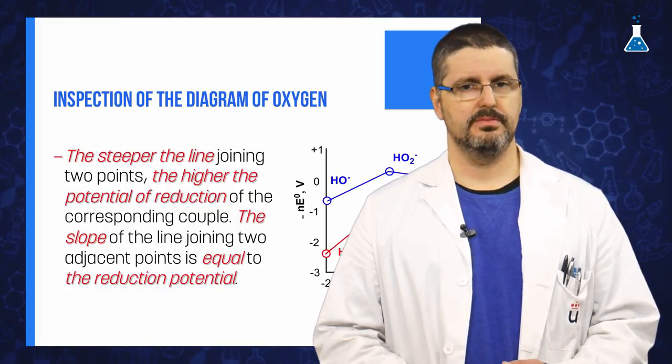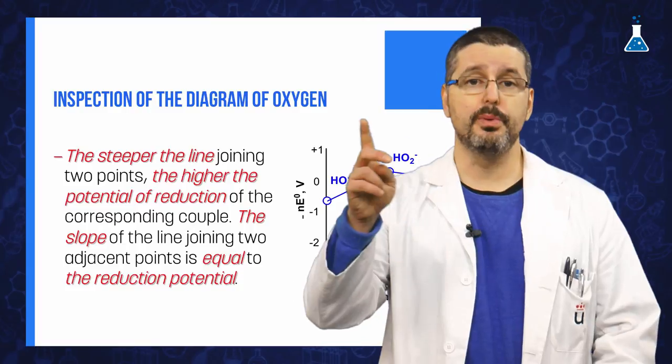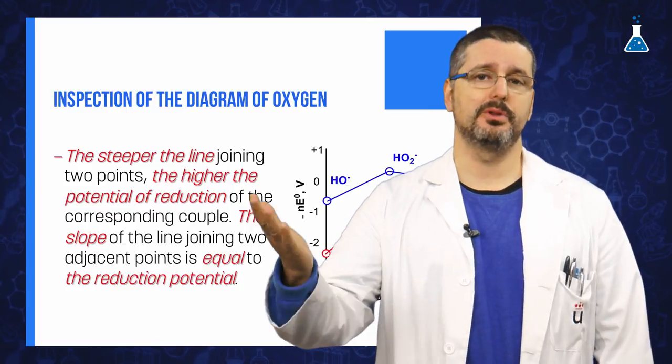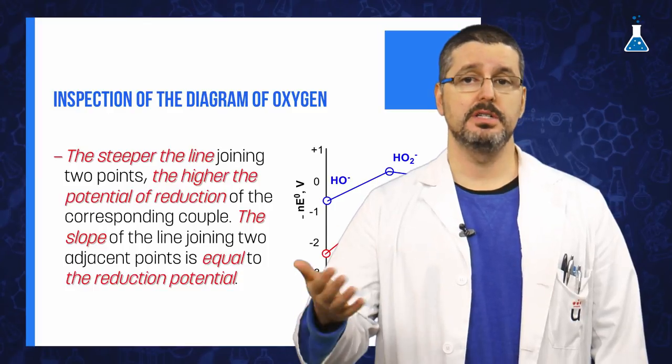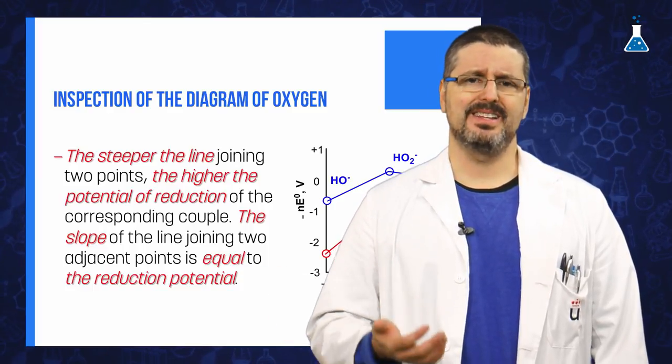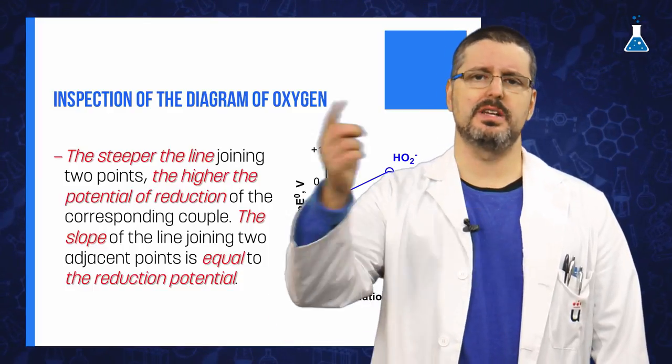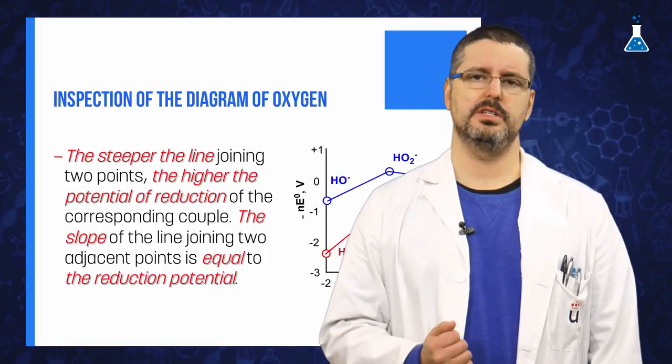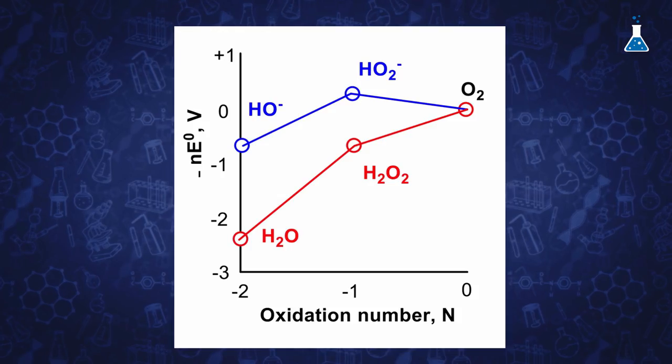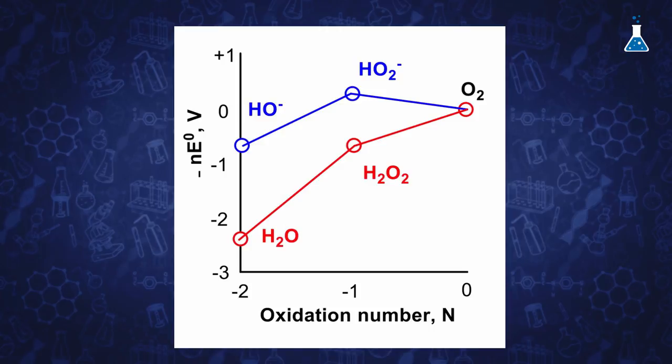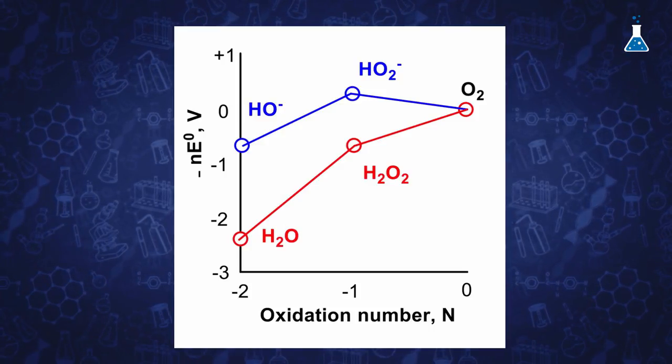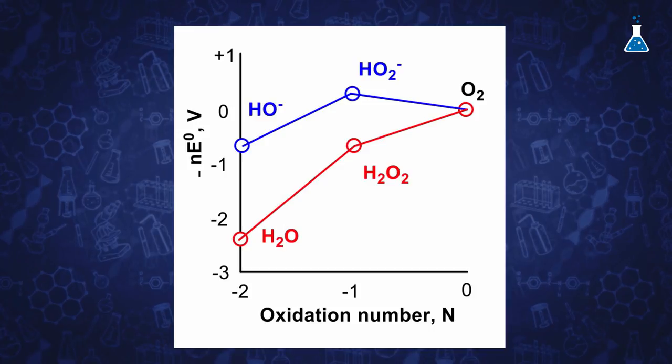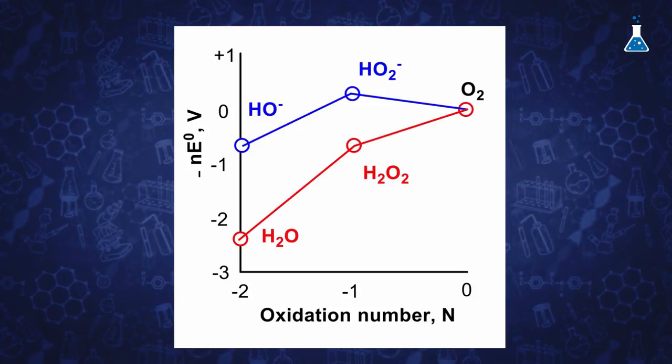If we inspect the diagram of oxygen, we can deduce the following aspects. The steeper the line joining two points in the diagram, the higher the potential of reduction of the corresponding couple. That prediction is based on the fact that the slope of the line joining two adjacent points is equal to the reduction potential. We can see this fact in the oxygen diagram, where the line connecting hydrogen peroxide and water is steeper than the line connecting oxygen and hydrogen peroxide, according with the reduction potential.